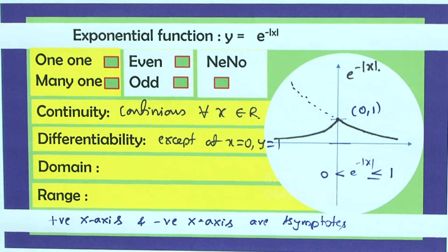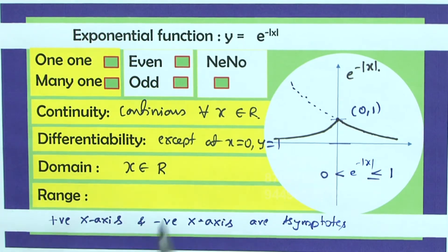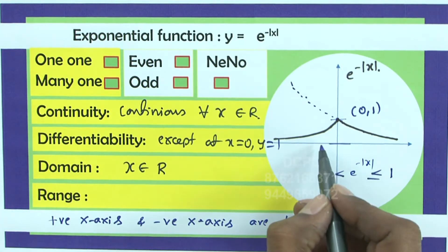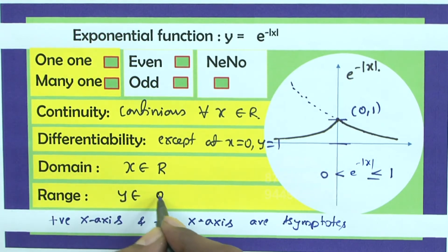What about domain? Domain means x belongs to set of real numbers. What about range? Starting from 0 up to 1. So, y belongs to 0 to 1 excluding 0 including 1.